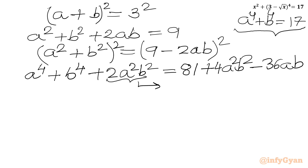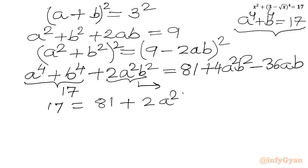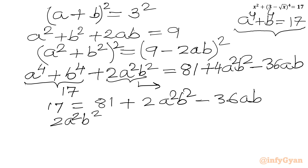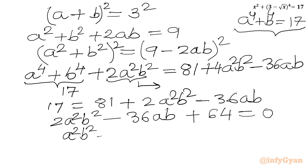Taking the 2a²b² term to the right-hand side and substituting a⁴ plus b⁴ equals 17 from equation 2, we get: 17 equals 81 plus 4a²b² minus 2a²b² minus 36ab. Rearranging, all terms to the right: 2a²b² minus 36ab plus 64 equals 0.